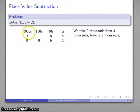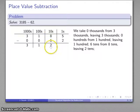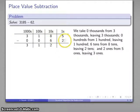0 thousands from 3,000s. That leaves 3,000. 0 hundreds from 1 hundred. That leaves 1 hundred. 6 tens from 8 tens. That leaves 2. 2 ones from 5 ones. That leaves 3.